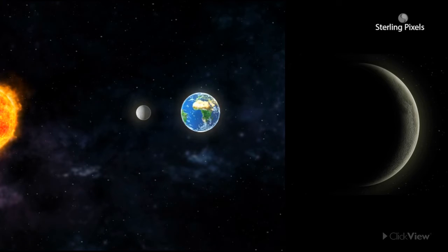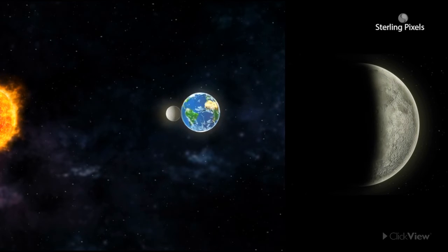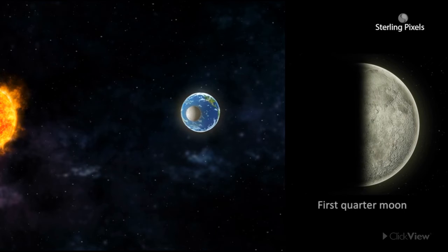The crescent moon waxes, or appears to grow fatter each night. When half of the moon is illuminated, we call it the first quarter moon.